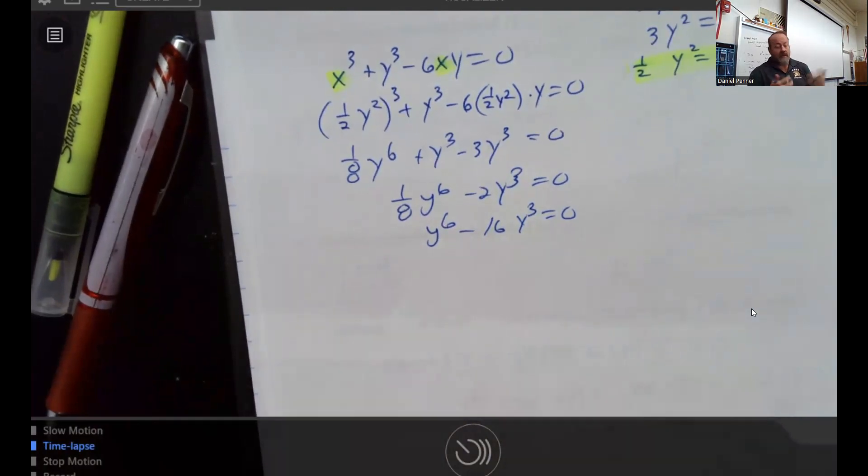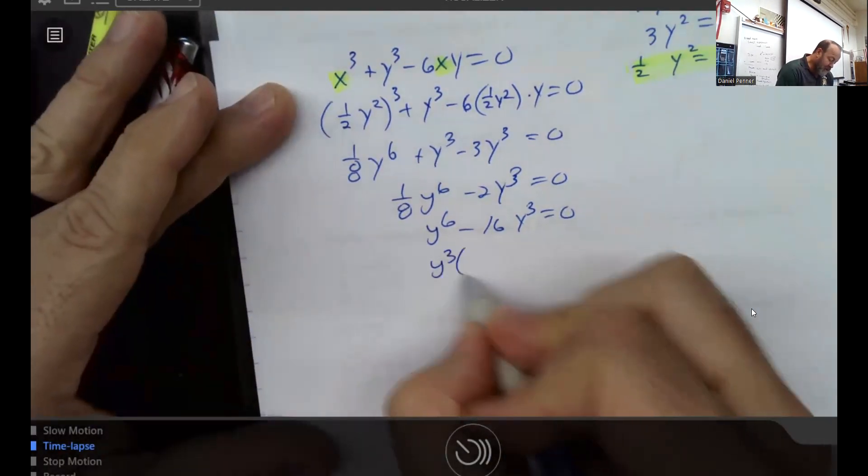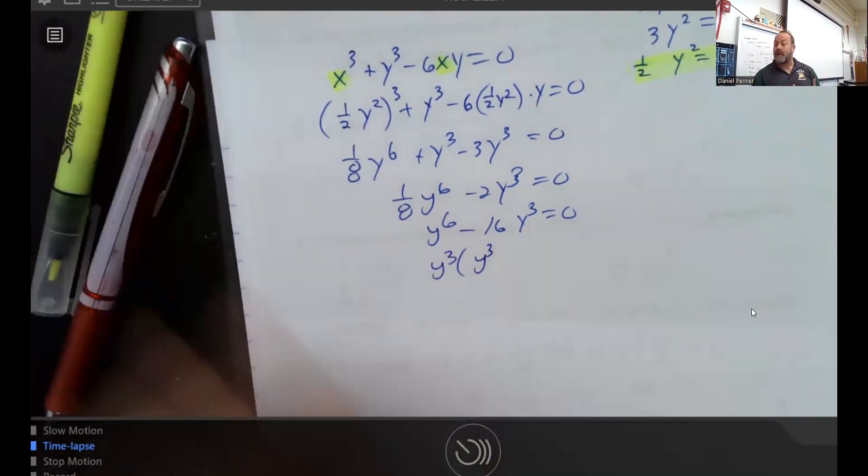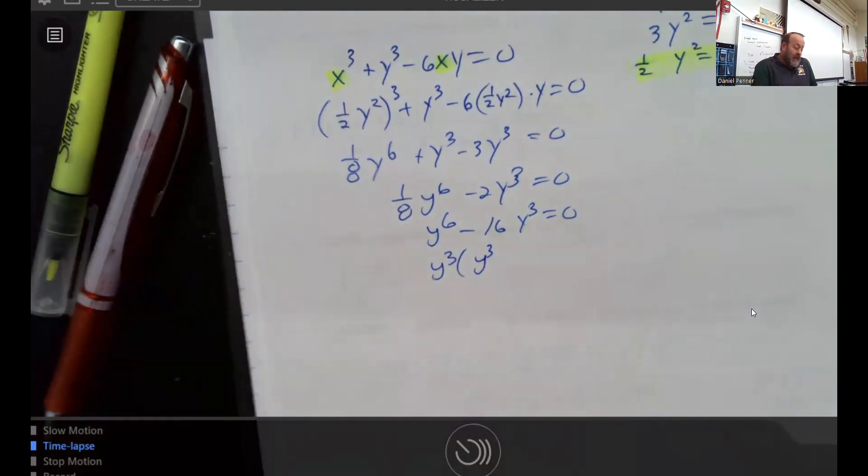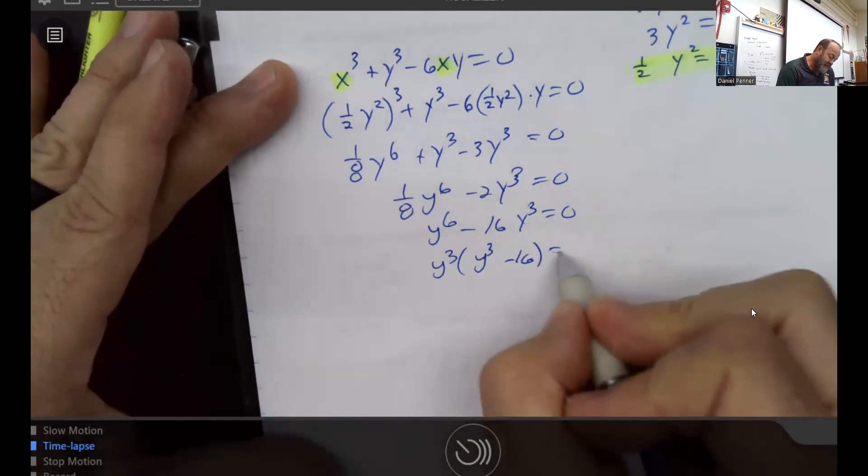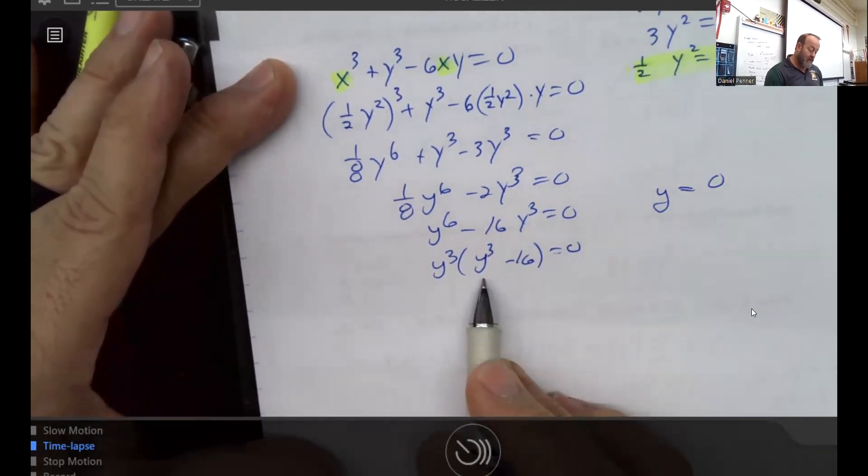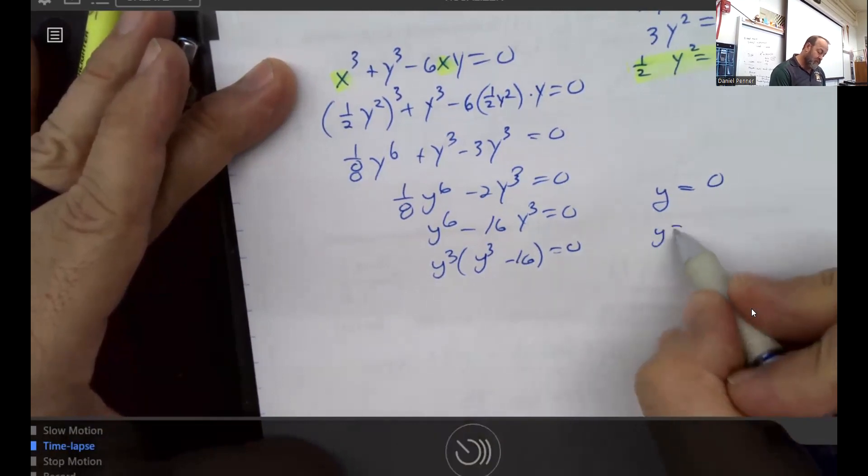And these both have a y³. We've been calling it lowest powers, least powers. That's what I'm doing. I took the lowest power of the two, and all of a sudden, I found out that what makes 0 happen is if y is 0, or if y equals the cube root of 16.